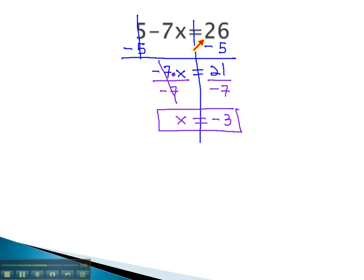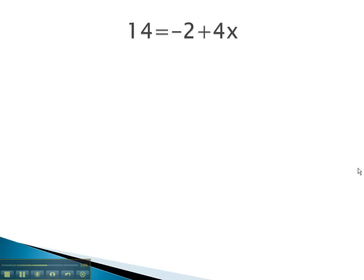Let's try another example. In this problem, the variable's on the other side. But we will still follow the same pattern, trying to get the x alone. First, by adding and subtracting.